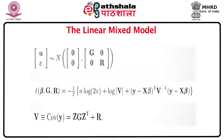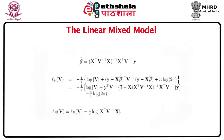Inference for the linear mixed model can be effected through the principle of maximum likelihood. If we assume normality of u and ε, then the log likelihood of the data is given by the usual multivariate normal log likelihood. The variance V is the covariance of y, given by ZGZ′ plus R. The estimate of β has a closed form expression resembling the GLS estimator: β̂ equals (X′V⁻¹X)⁻¹ X′V⁻¹y. This assumes the estimate of V is known; in practice V is unknown and β and V must be estimated iteratively.